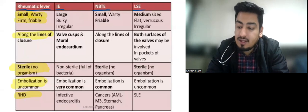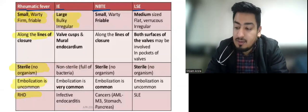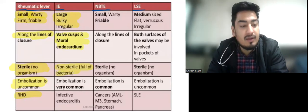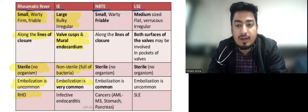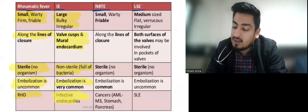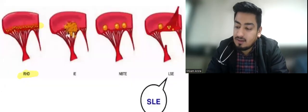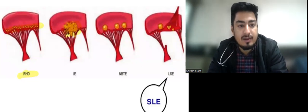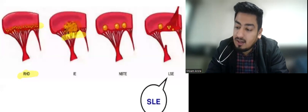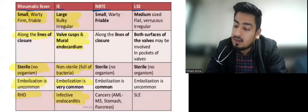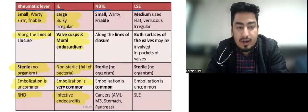In IE, the vegetations are large, bulky, and irregular, mostly present at the valve cusp and mural endocardium. They are non-sterile — full of bacteria. Embolization is very common: emboli can go into the brain and cause stroke, or into the spleen and cause splenic abscess. The vegetation of IE is very large and friable and can itself cause rupture of the papillary muscles.